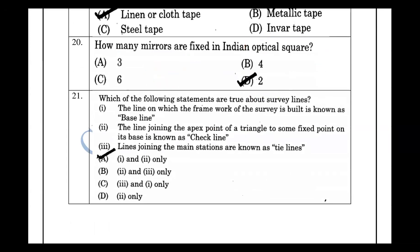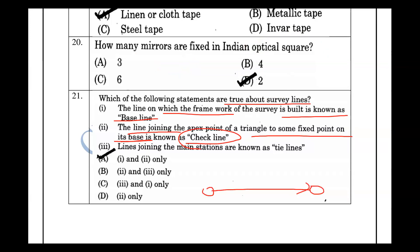Which of the following statements is true about the survey line? The line on which the framework of the survey is built is known as the baseline. The line joining the apex of a triangle to a fixed point on its base is the check line. The two main stations define the main station line.